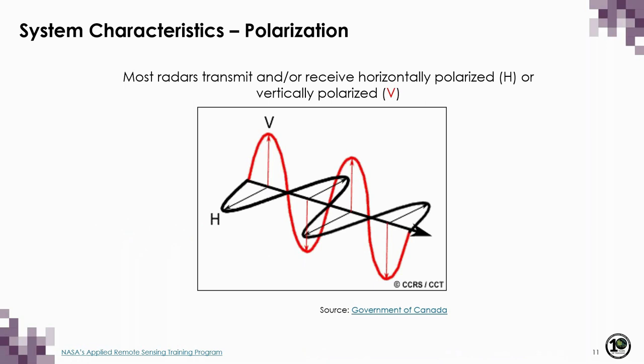Most radars today transmit and receive horizontally polarized or vertically polarized microwaves. Regardless of what is transmitted, the backscattered wave can have a variety of polarizations, and it is the analysis of these different transmit-receive polarization combinations that is the focus of radar polarimetry.